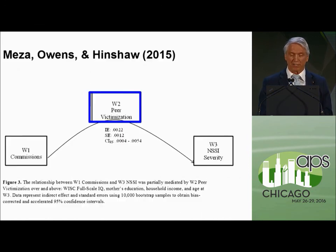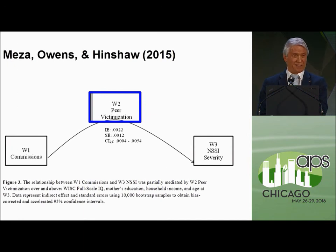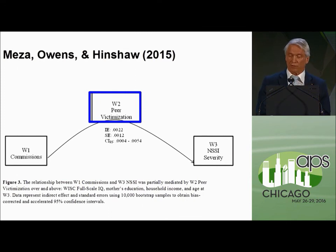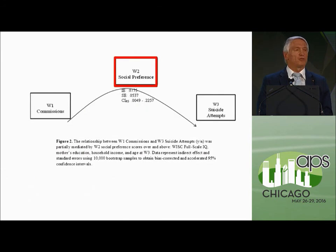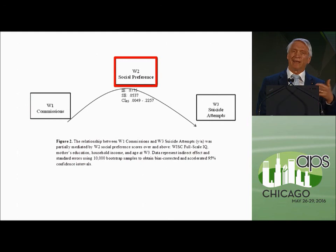Recently published findings by Jocelyn Mesa in our lab looked at the peer domain. The girls' report of how victimized they were physically and verbally by their peers was a strong partial mediator of NSSI severity — the predictor here is a dimensional measure of response inhibition. But it was teachers' reports using Deshawn's sociometric rating of how rejected the girls were — the opposite of social preference — that was the partial mediator of suicide attempt. So the neuropsychological domain, comorbidity domain, and social preference domain are all important, but slightly differently, to predict NSSI versus suicide attempt.